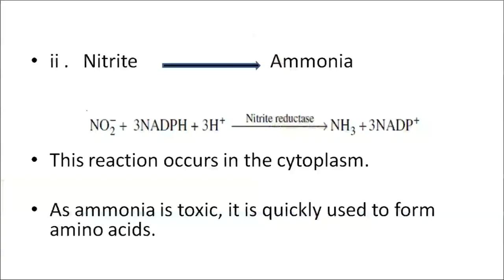The second step: the nitrite formed is further converted to ammonia. This process also requires a specific enzyme — nitrite reductase. This reaction occurs in the cytoplasm. The ammonia formed is toxic and must be quickly used in the form of proteins by way of amino acid metabolism.